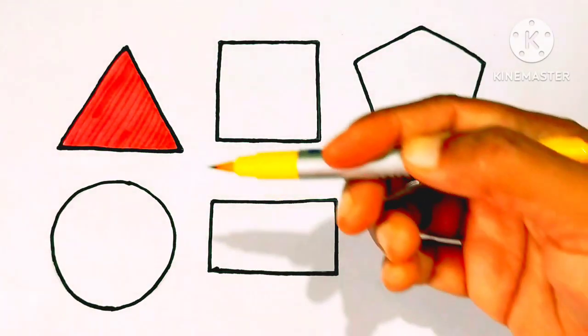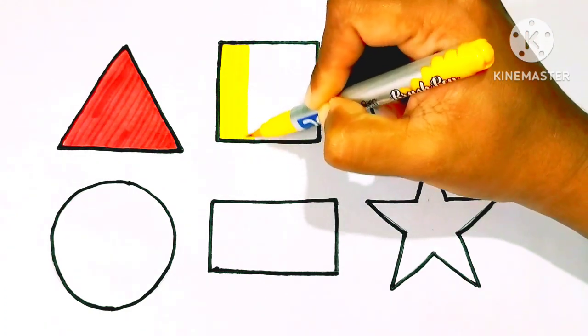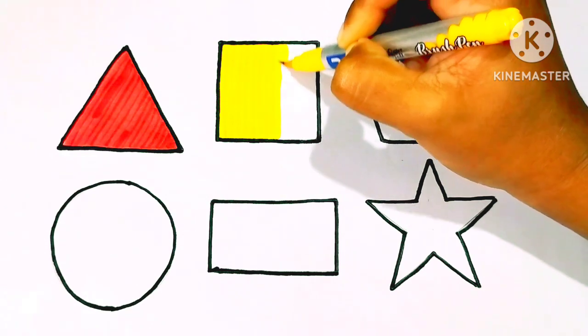Yellow colour. A, B, C, D, E, F, G, H, I, J, K. Y, yellow colour, square.